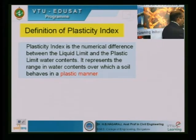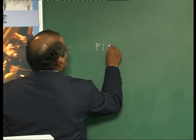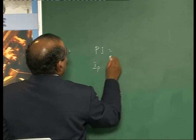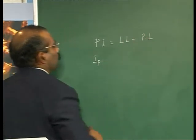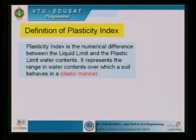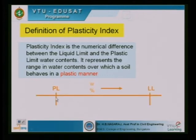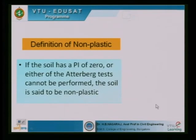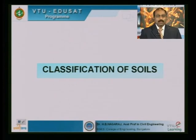The range in which the soil behaves as a plastic material is called the plasticity index, sometimes called PI or IP. It is equal to the liquid limit minus the plastic limit. Some materials, especially fine sands and coarse silts, do not exhibit any plasticity behavior and are called non-plastic.